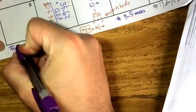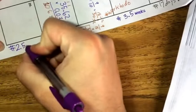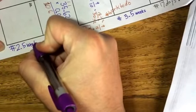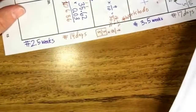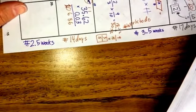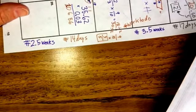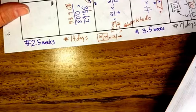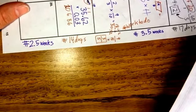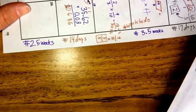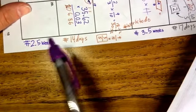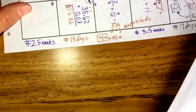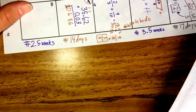And so then our hashtag for today is hashtag 2.5 weeks. Ladies and gentlemen, that is all we have left. We have 2.5 weeks. We can rock this out. There is no reason why we should not be doing the best of the best. We've had a rough couple of days. We need to get it in gear, folks. 2.5 weeks. Two and a half weeks until we are done. Let's make them great.